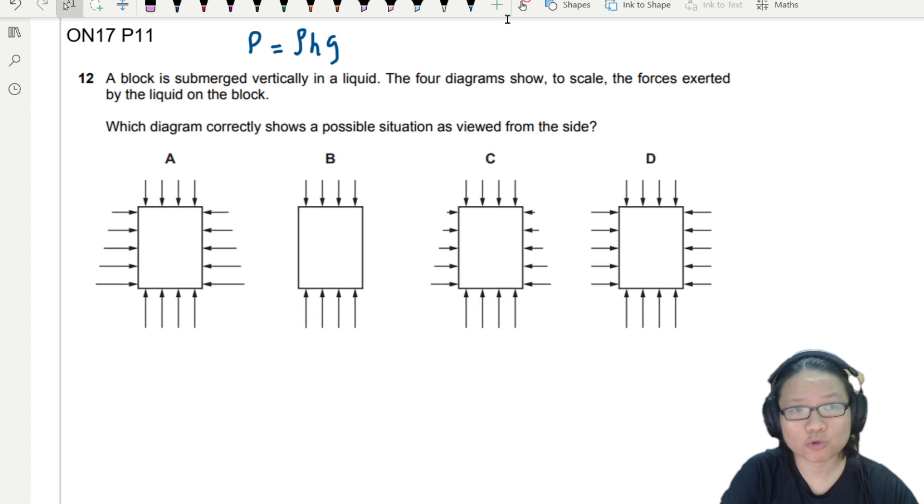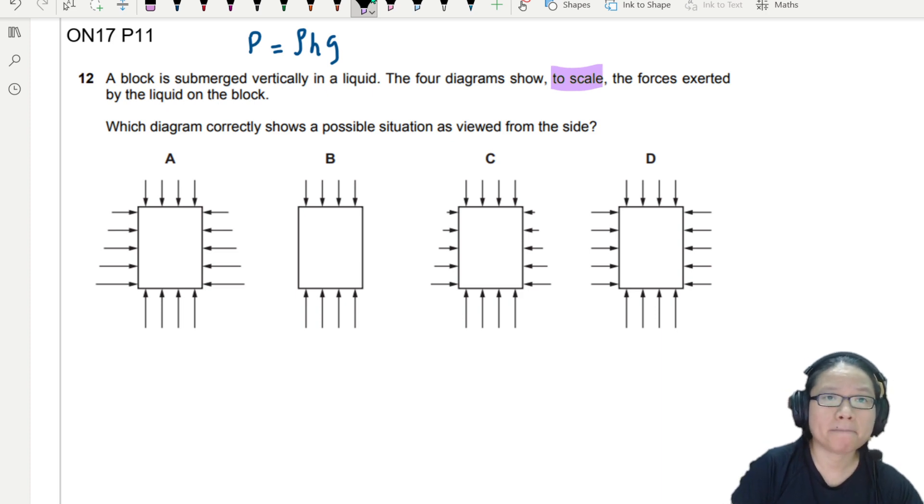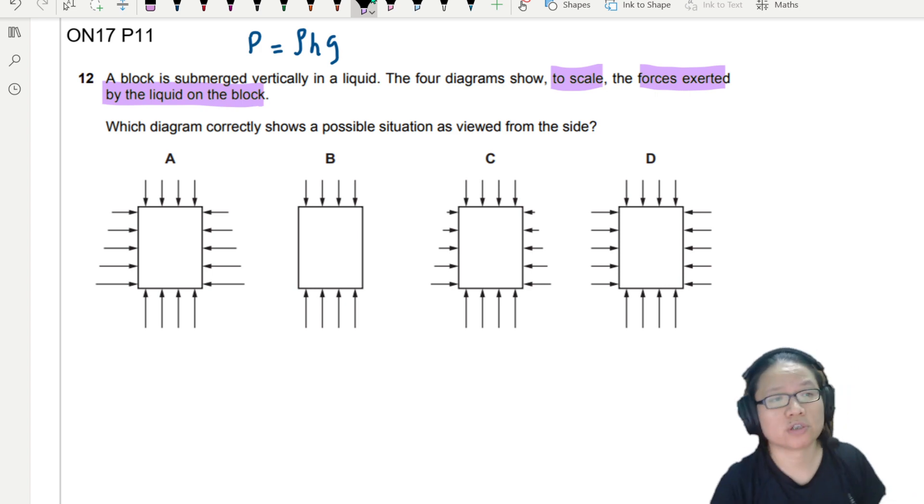The four diagrams show to scale, okay, in a rare occasion they do draw diagrams to scale, the forces exerted by the liquid on the block. So which diagram correctly shows a possible situation as viewed from the side? So all this arrow will show us forces.